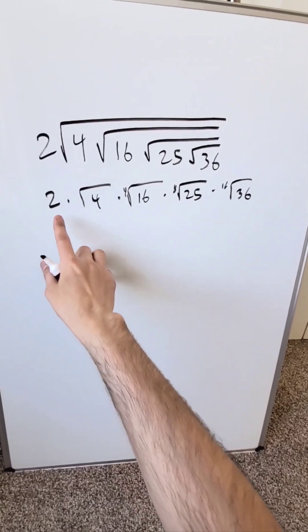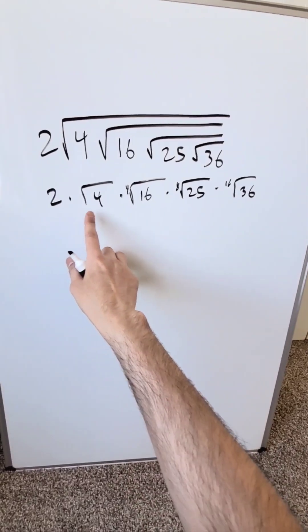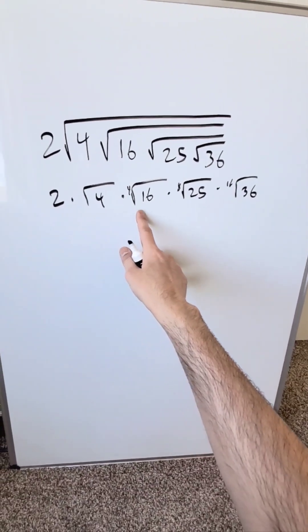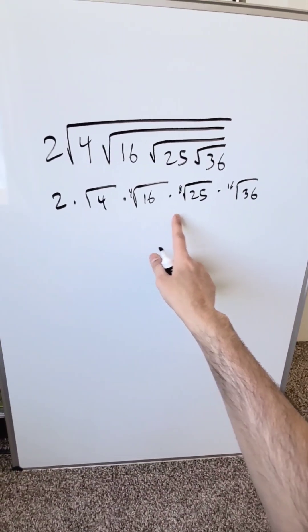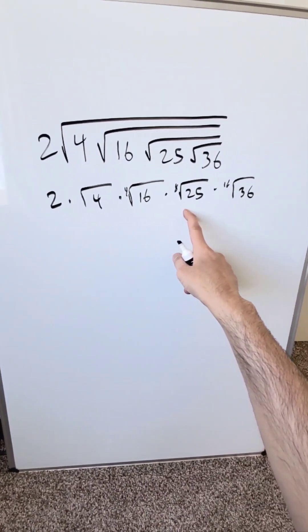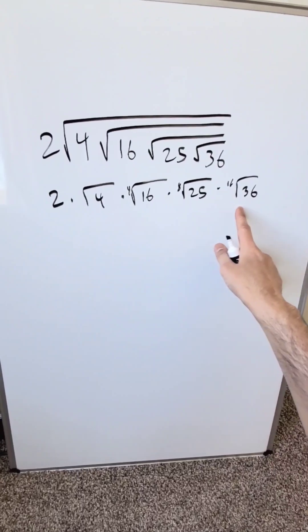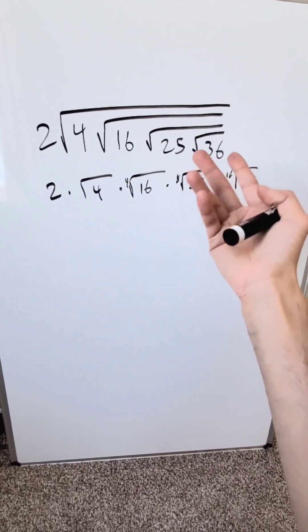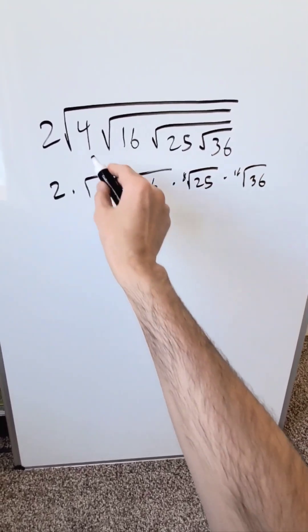For your perspective, you're looking at 2 times the square root of 4, times the 4th root of 16, times the 8th root of 25, times the 16th root of 36. How do you evaluate it?